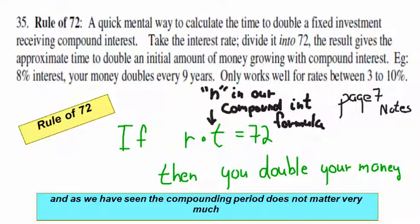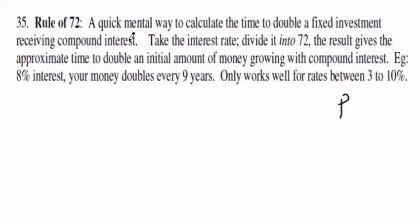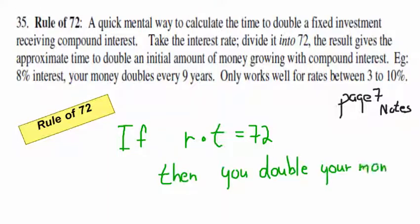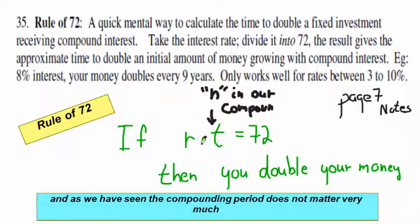Let's check out the Rule of Seventy-Two. The rule pretty much says: if you take your interest rate and multiply it by the number of years, and that equals seventy-two, then you've doubled your money. It's a handy way to do quick mental math to find how long it takes to double your money, or what interest rate you need.